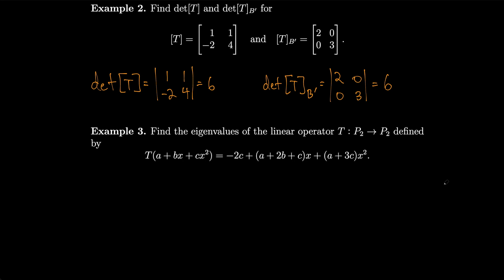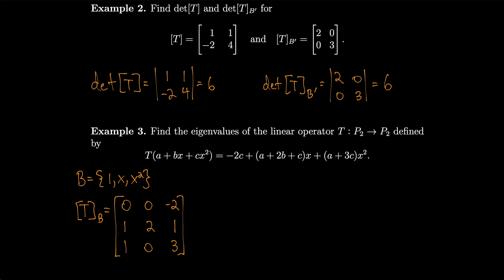As a last example, let's find the eigenvalues of the linear operator T from P2 to P2 defined by T(a + bx + cx²) = −2c + (a + 2b + c)x + (a + 3c)x². The standard basis for P2 is {1, x, x²}. Writing T_B, the first column (from the constant term) gives (0, 1, 1), the second column gives (0, 2, 0), and the third column gives (−2, 1, 3). So T_B = [[0,0,−2],[1,2,1],[1,0,3]].